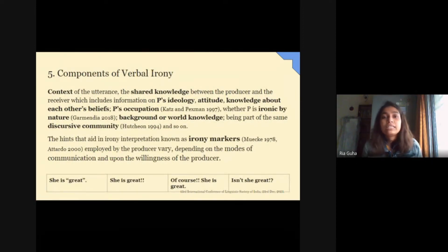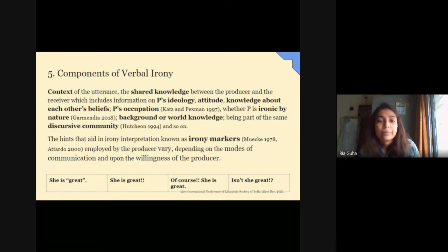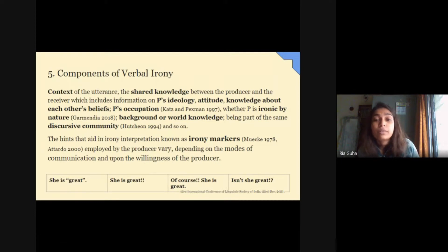Context, i.e. the physical setting like time and place, the verbal context, shared knowledge between producer and receiver which includes information on the producer's ideology, attitude, knowledge about each other's beliefs, the producer's occupation to some extent, whether the producer is ironic by nature, background or world knowledge, being part of the same discursive community, and others help in understanding verbal irony. Also, there are irony markers employed by the producer to help the receiver detect irony. These markers vary depending on the mode of communication.